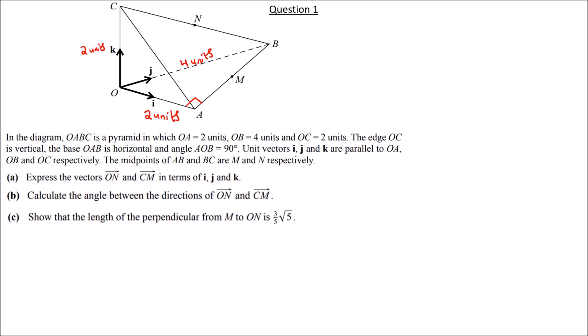We answer part A. We find vector ON. To get from O to N, we need to find the lengths of the sides. First, we find the length NB.